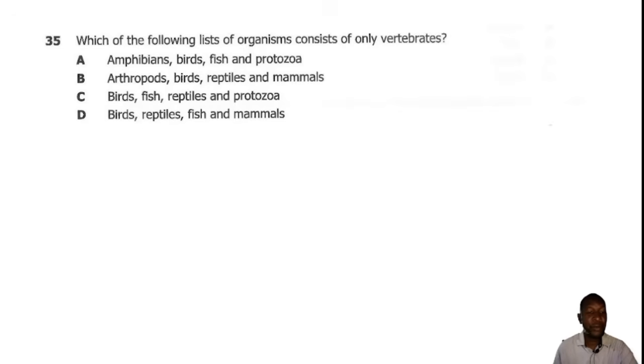Question 35. Which of the following lists of organisms consists of only vertebrates? Vertebrates are animals that have a backbone and they belong to phylum Chordata. Under phylum Chordata, we have 5 classes: class Pisces, class Amphibia, class Reptilia and class Mammalia. So the correct answer is D.